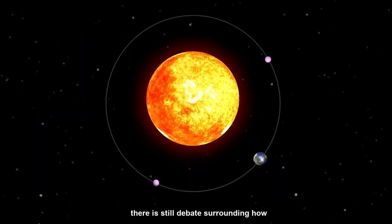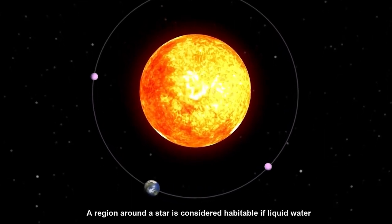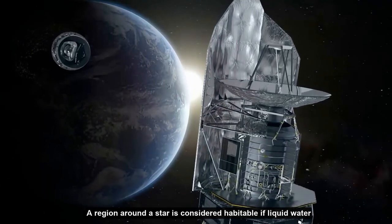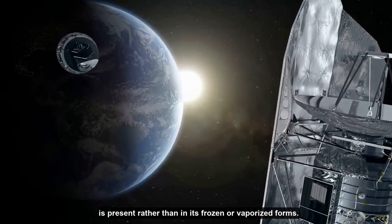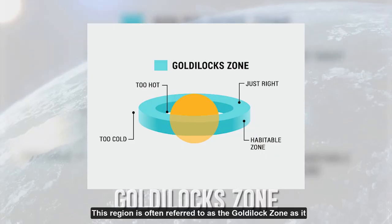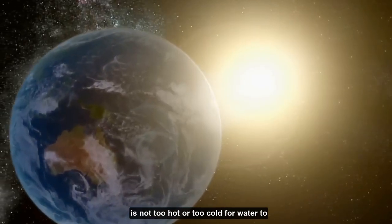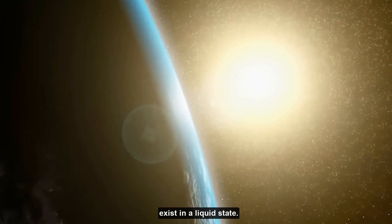Despite this, there is still debate surrounding how habitable Kepler-22b truly is. A region around a star is considered habitable if liquid water is present rather than in its frozen or vaporized forms. This region is often referred to as the Goldilocks zone, as it is not too hot or too cold for water to exist in a liquid state.